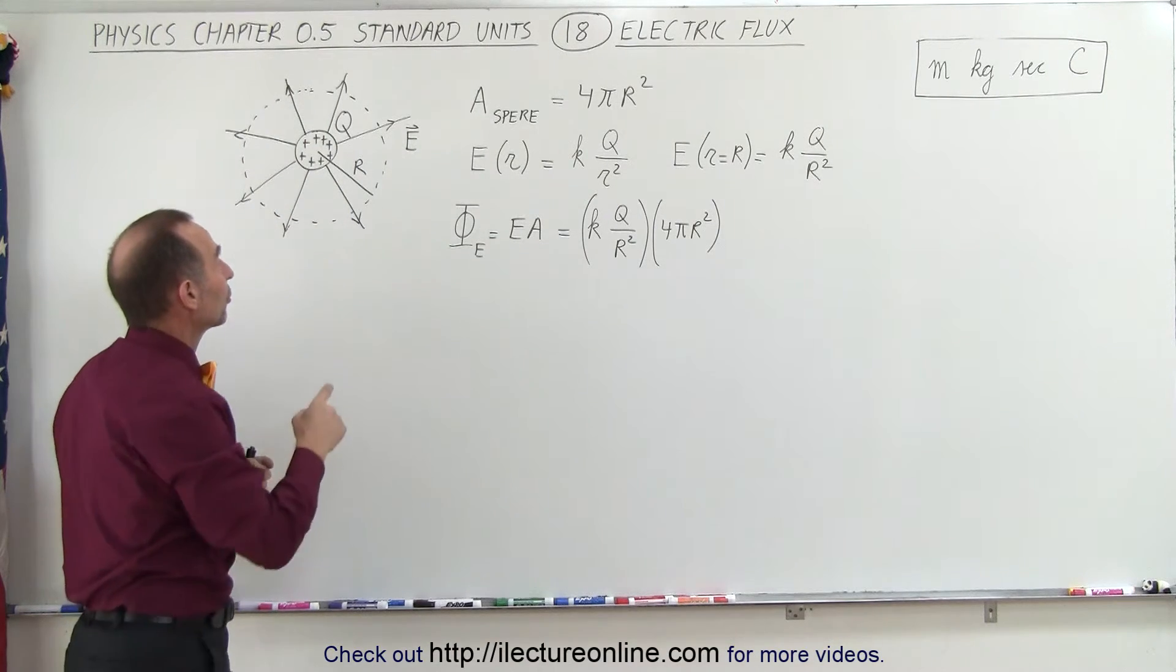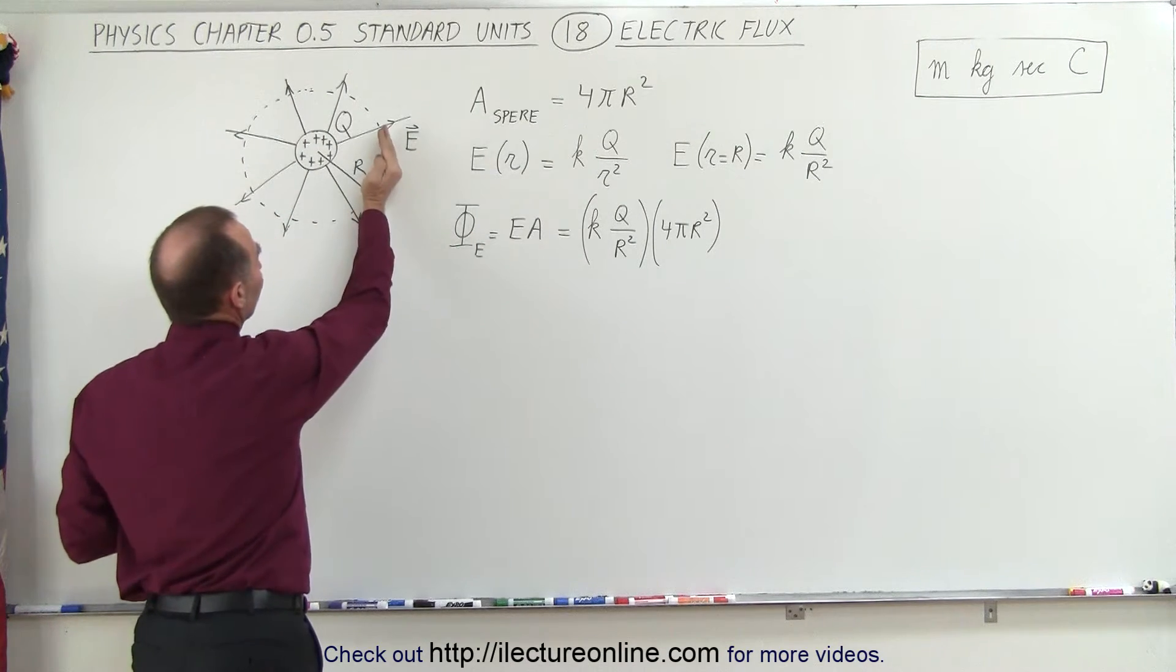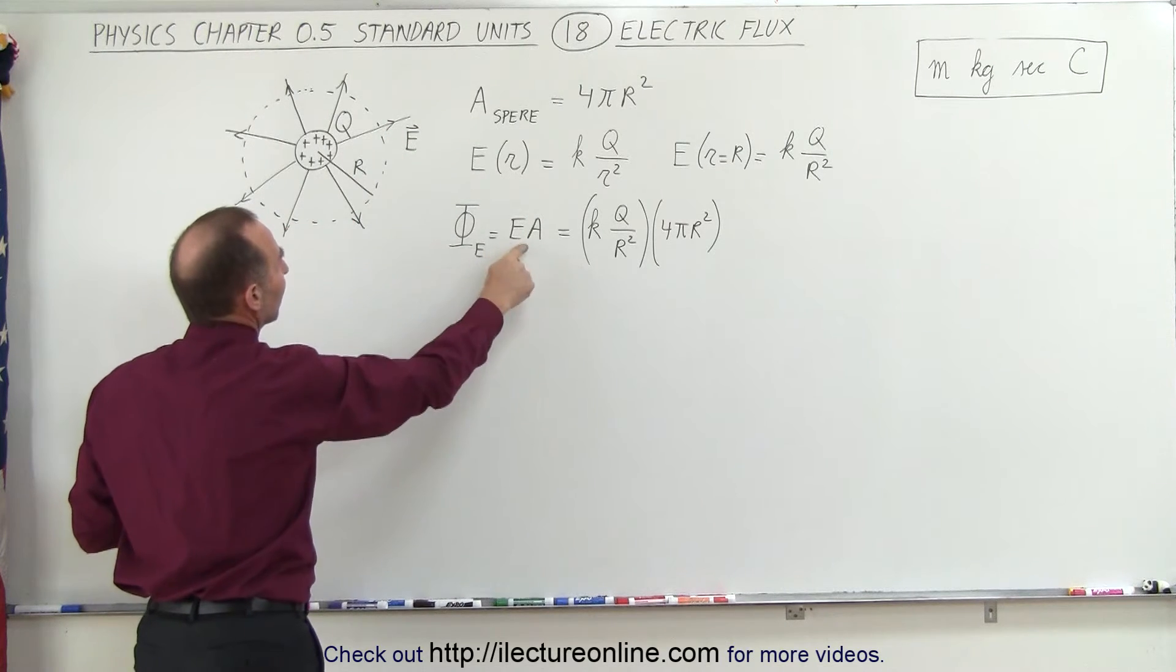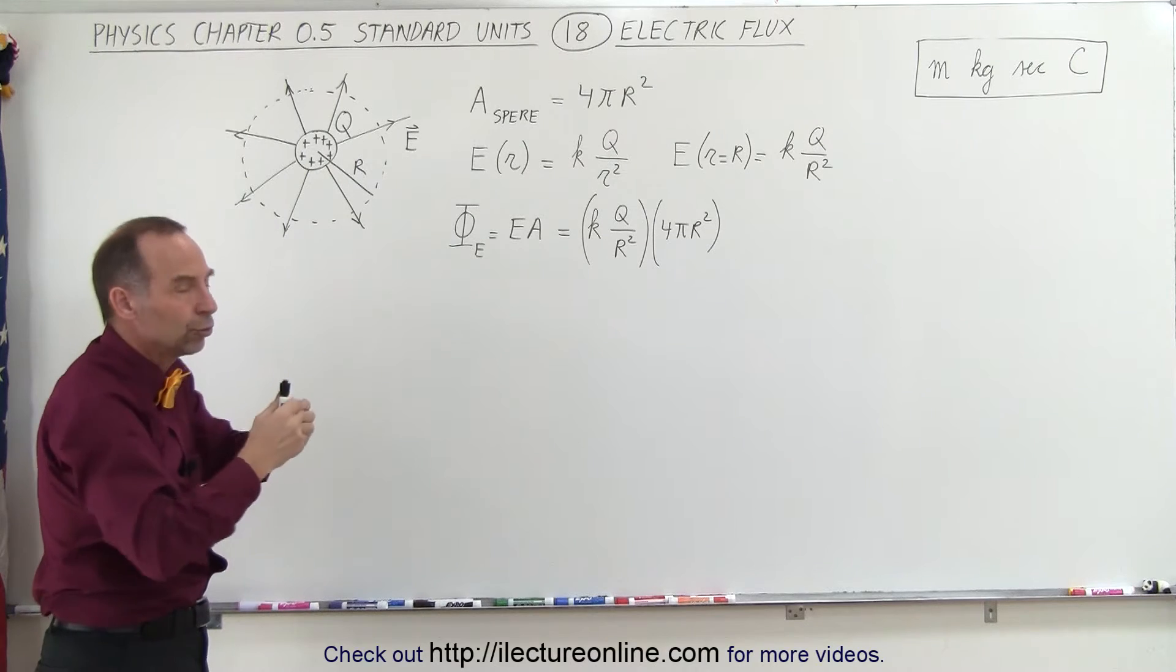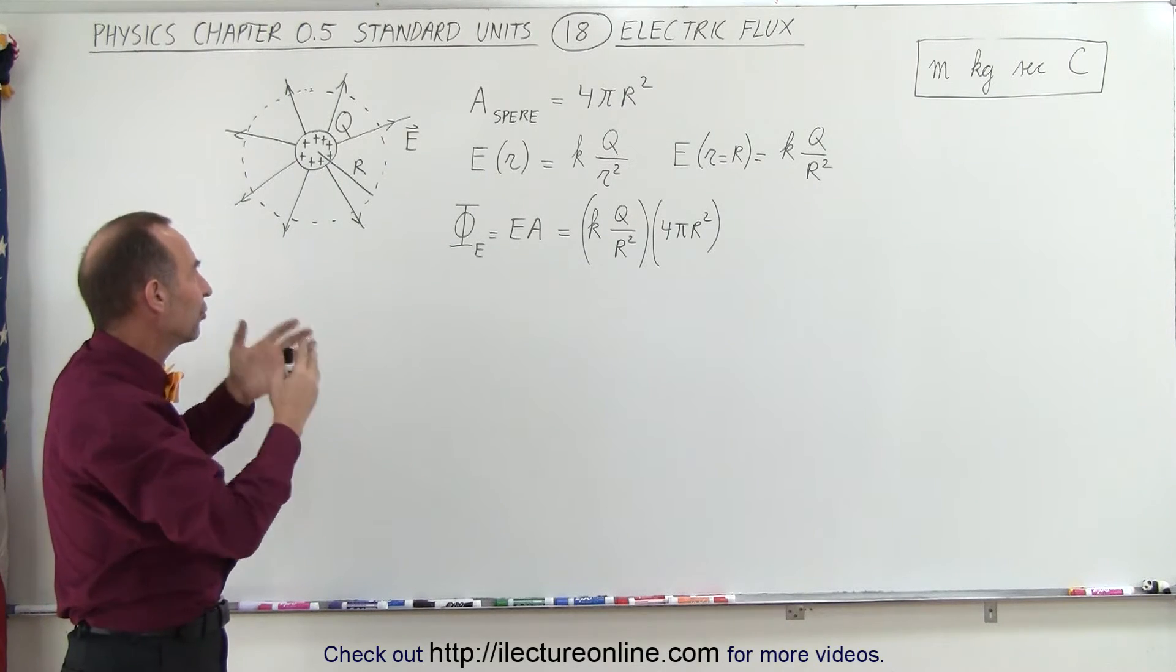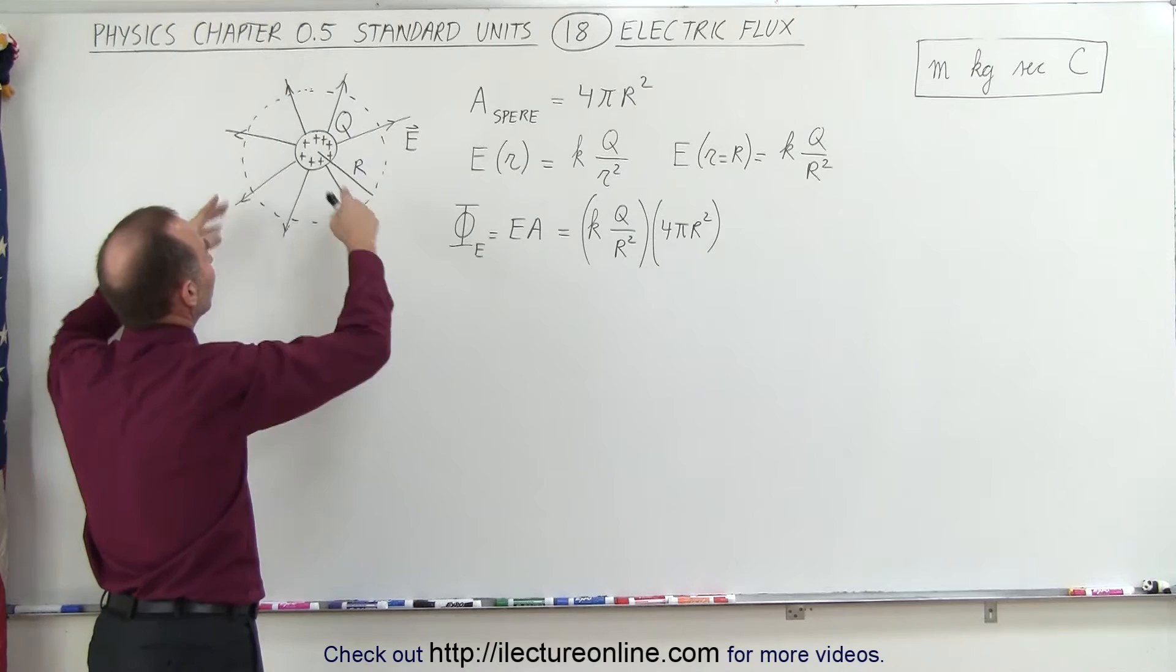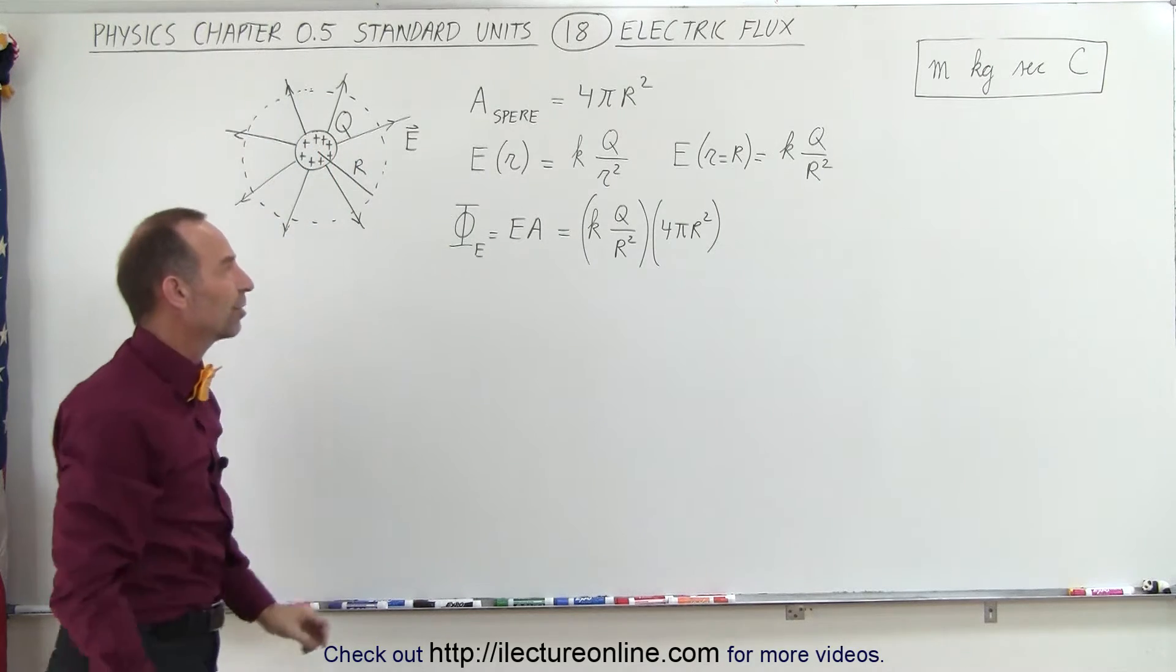So what we're going to do is multiply the strength of the electric field at the Gaussian surface times the total surface area, which then tells us that is equal to the electric flux. It kind of tells you the total number of electric field lines emanating from that charge object.